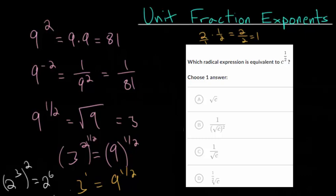But we also know that the square root of 9 is equal to 3 as well. So if they're both equal to 3, then they must be equal to each other. So this 9 to the 1 half power is the square root of 9.